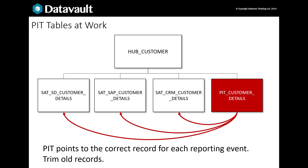A PIT table holds a pointer to the record in each of the satellites that's valid for each customer for each day. For example — and this is common in many businesses — users might want to process end-of-day data only. The PIT table is then calculated after loading the raw vault as a business vault process, and we find the end-of-day records for each customer in each satellite and insert references into the PIT table. When we want to find the relevant satellite records, we do an equality join with the PIT table, which is much faster than looking for the greatest effective date. The PIT table is quite long but thin, and we can trim it to only hold a few months of reference data.